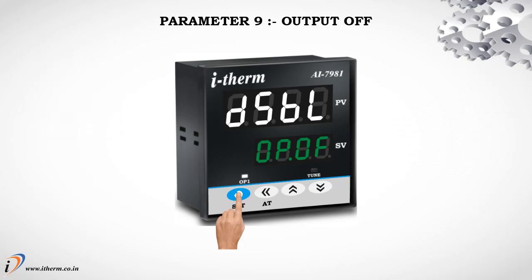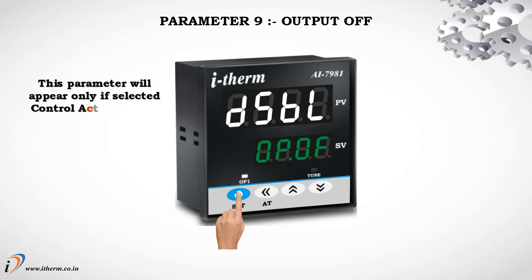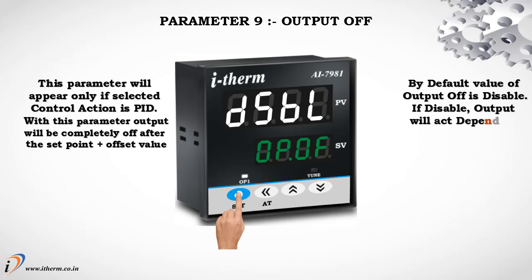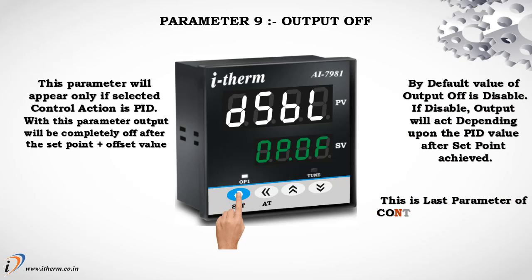Parameter 9: Output Off. This parameter will appear only if selected control action is PID. With this parameter, output will be completely off after the set point plus offset value. By default, value of output off is disabled. If disabled, output will act depending upon the PID value after set point is achieved. This is the last parameter of control list. Press set key to enter in run mode.